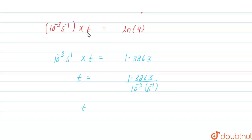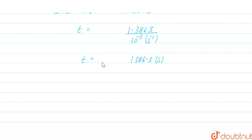Calculating this, we get time T equal to 1386.3 seconds. So the time taken for 10 grams of reactant to reduce to 2.5 grams is 1386.3 seconds. I hope this answered your question, thank you.